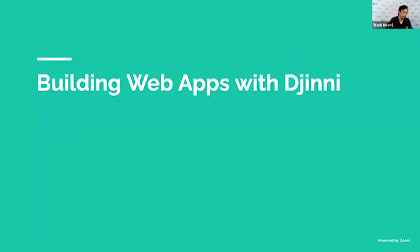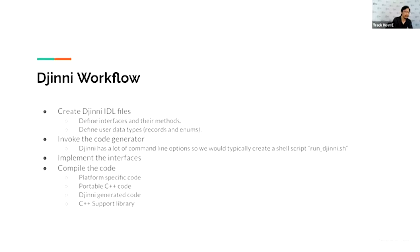Next we're going to talk about building web apps with Genie. The Genie workflow is like this: first you create some IDL files, define your interfaces and their methods in these IDL files. You can also define user data types — mainly records and enums. Records are data and enums are just symbols for numbers. Then you call the code generator on the command line. Genie has a lot of command line options to customize your output, so we typically create a shell script called run_genie.sh with all the arguments.